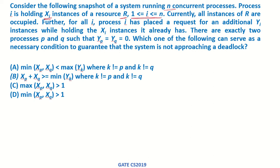If we are having n processes, p1 is holding x1 instances of this resource r, p2 is holding x2 instances, and so on. pn is holding xn instances of this resource r. Currently all instances of r are occupied.